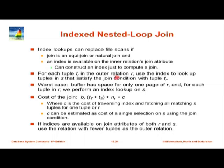The next algorithm is the index nested loop join, which is fairly simple. For each tuple t_r in the outer relation r, use the index to look up tuples in s that satisfy the join condition. The join condition must be something the index can support. The most common case is an equi join r.a = s.b. For each tuple in r, take that tuple, look at its r.a value, use the index on s.b to find all matching s tuples, then output all those pairs. Then move to the next r tuple.